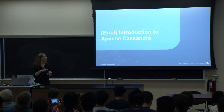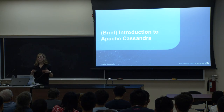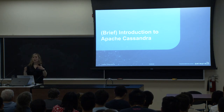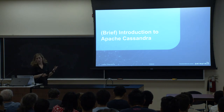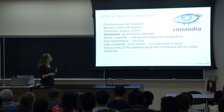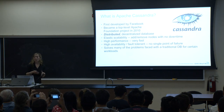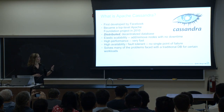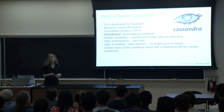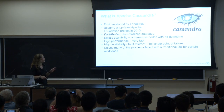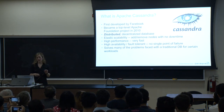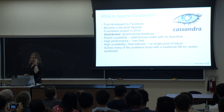So let's go into a very brief introduction to Apache Cassandra. What exactly is Apache Cassandra? It was first developed by Facebook, and they released it into the open source community. From there, it became a top-level Apache project in 2012. The key thing: Cassandra is a distributed, decentralized database. Keep remembering that word — distributed — even though our demo is local here on my laptop.